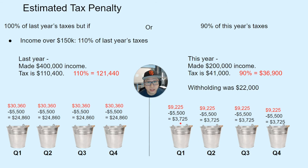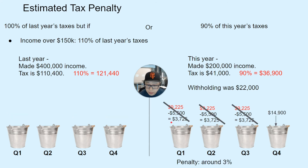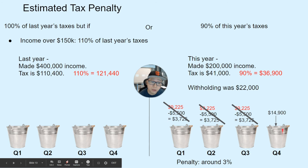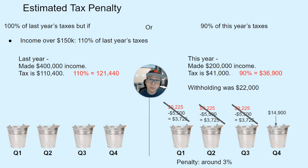What happens if you decide not to make these prepayments for the first three quarters and instead make one lump sum payment of $14,900? Because you didn't make payments in Q1, Q2, or Q3, the IRS will charge penalties for those empty buckets — around 3% of the total that wasn't paid. Even though you've made all the payments in Q4, because the earlier buckets were empty, the penalty would be around $335 using the 3% rule, though this rate can change year to year.